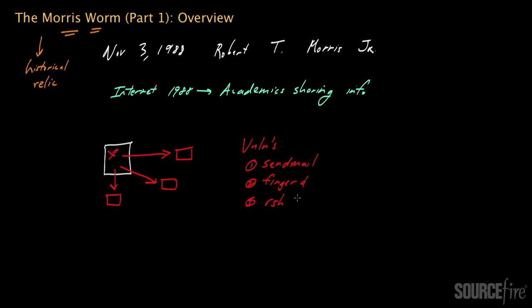In the case of R-Exec, and to a certain degree RSH, the Morris worm was really taking advantage of the fact that many users choose simple passwords — that was especially true 25 years ago. So the Morris worm included a module that tried to guess passwords in order to gain unauthorized access to user accounts on a system.